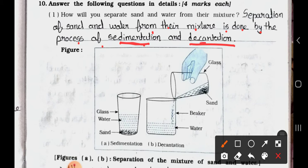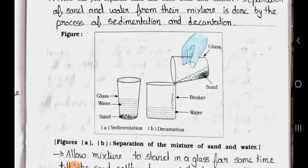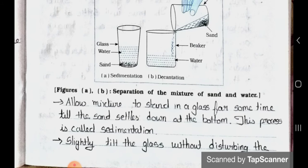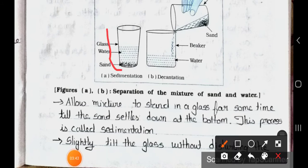See the figure. See here, here is one glass. In that, water is there and here is sand. And here is a beaker with water. See this glass, in that glass the sand is here. Now see the process: Allow the mixture to stand in a glass for some time till the sand settles down. Here the sand settles down at the bottom. This process is called sedimentation.